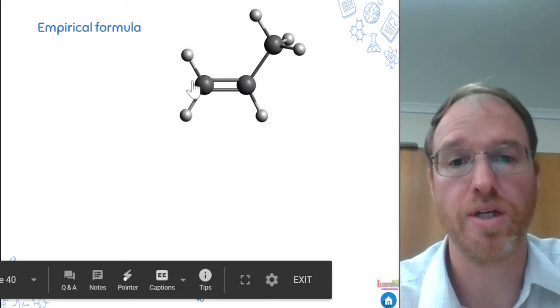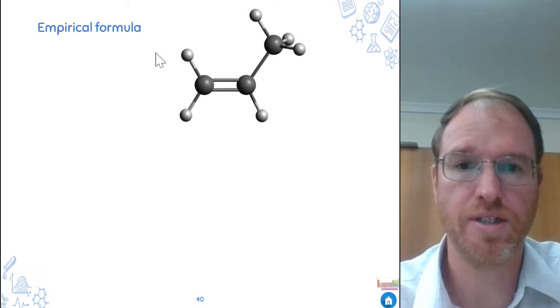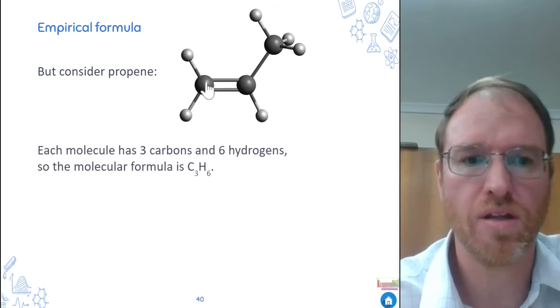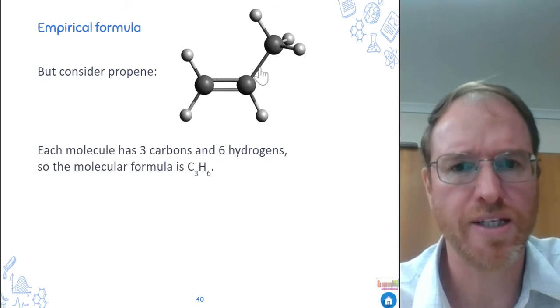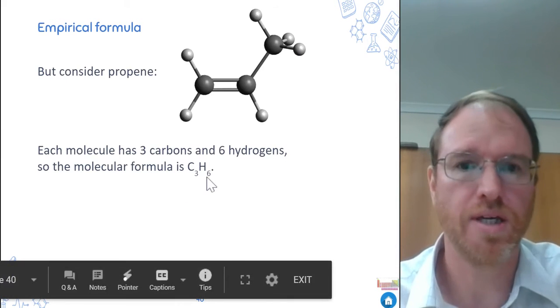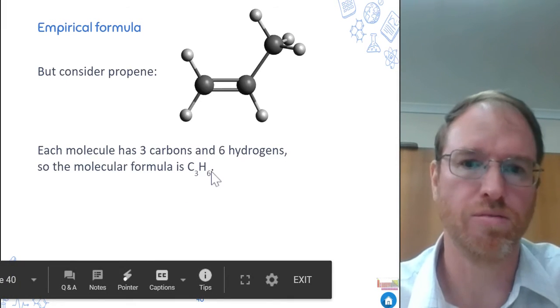So have a look at this example. This is propane, right? And you can see it's got carbon and it's got hydrogen around it. When we work out the molecular formula, well, it has three carbon, it has six hydrogen. So we get C3H6. That's the molecular formula.